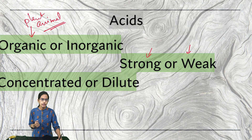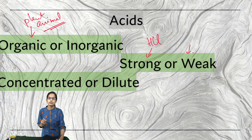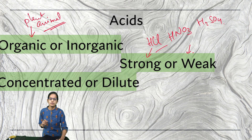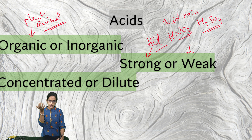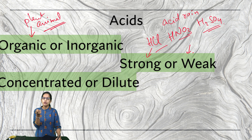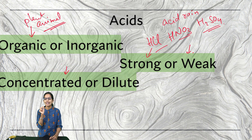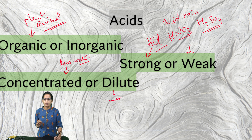Acids can also be strong or weak. Strong acids include HCl (hydrogen chloride), nitric acid, and sulfuric acid — all responsible for phenomena like acid rain. These same acids can also be in concentrated form, meaning very little water is present. When diluted, more water is present — for example, 3% HCl is a diluted HCl.